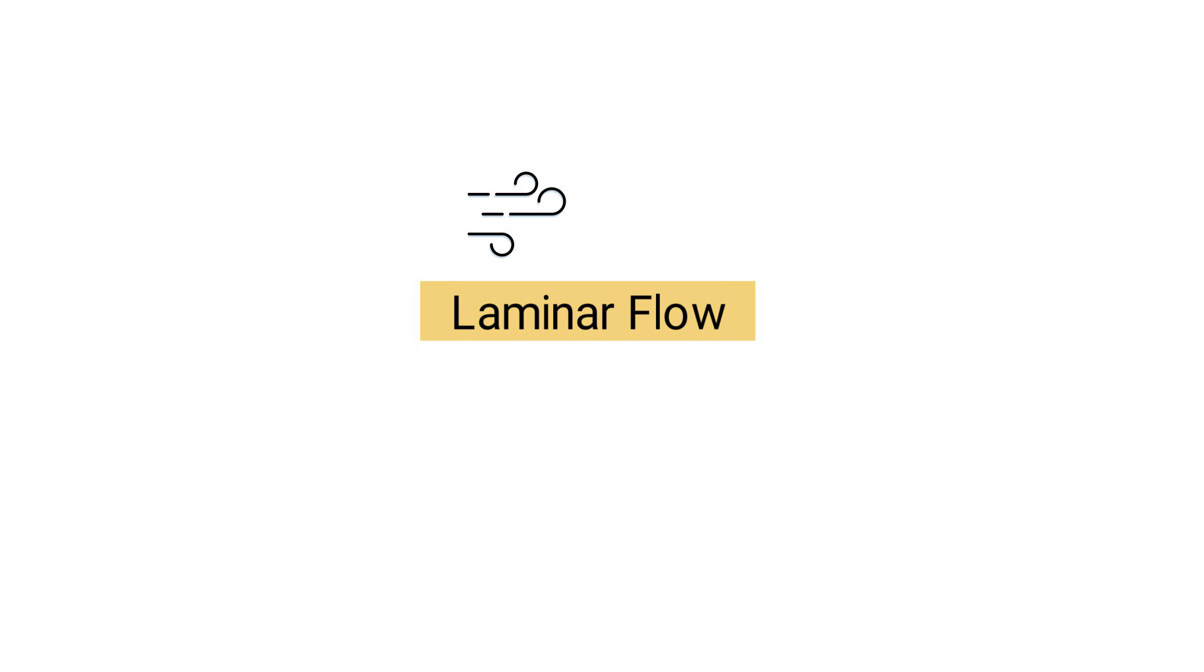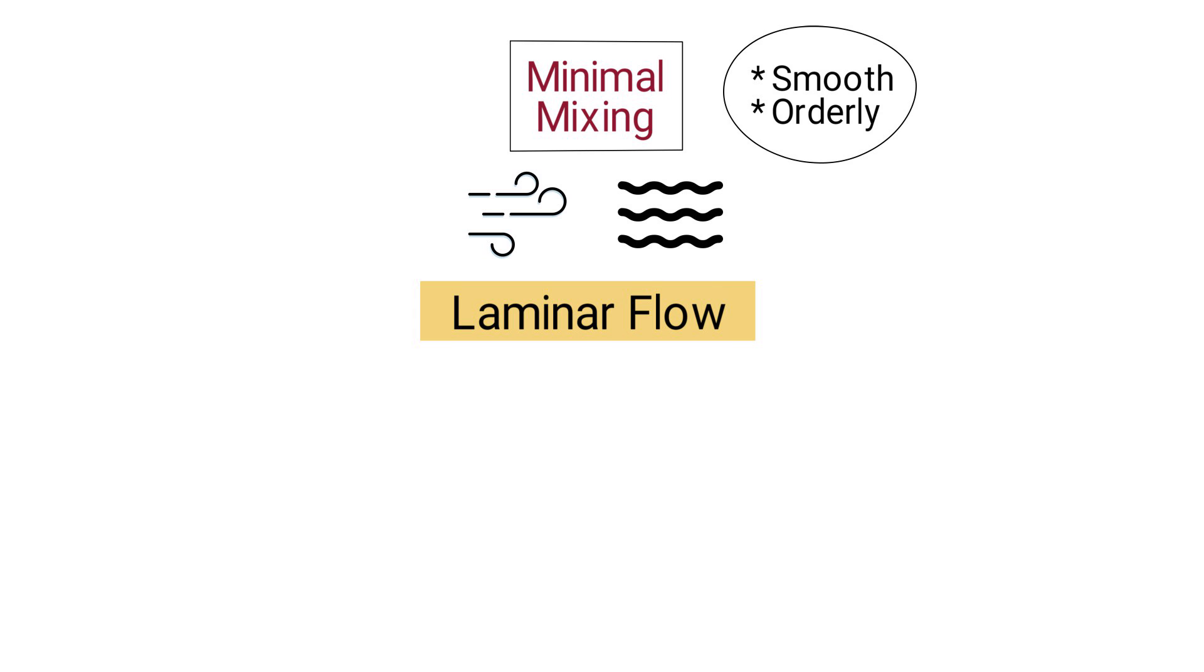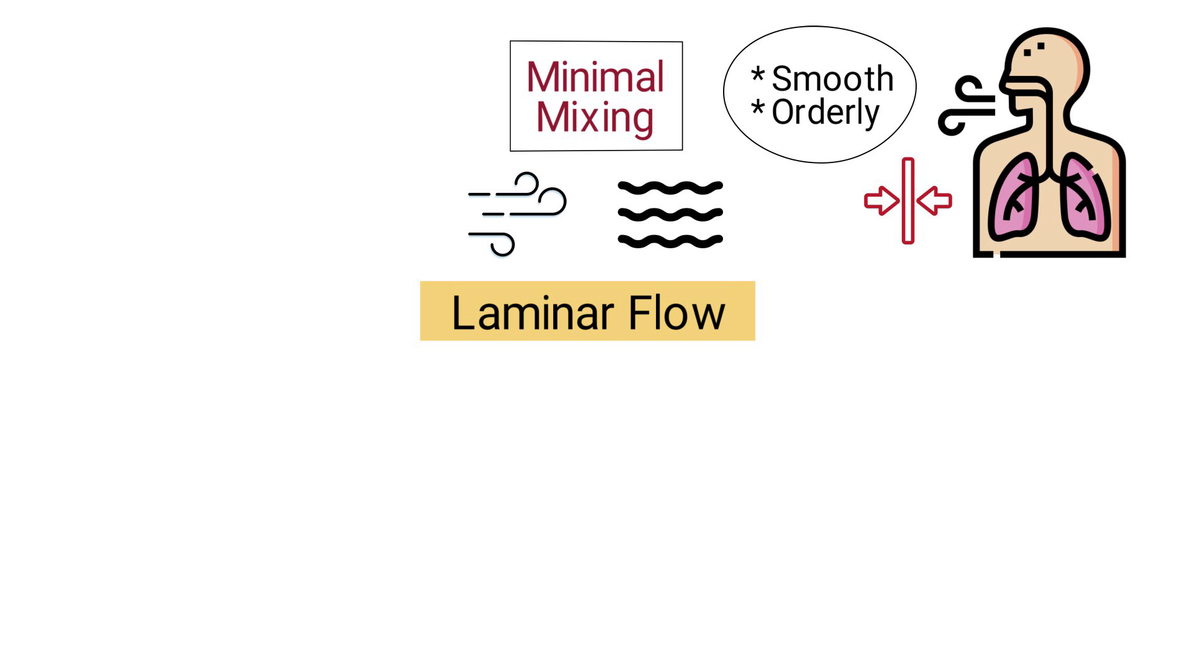Laminar flow refers to a type of airflow in which the air moves in parallel layers with minimal mixing between them. The flow is smooth and orderly and typically occurs in areas of the respiratory system where the airways are narrow and the airflow velocity is relatively low.